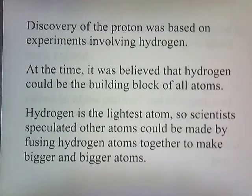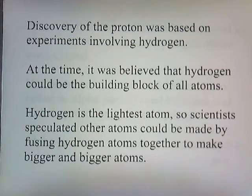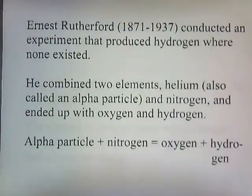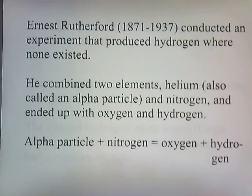The discovery of the proton was based on experiments involving hydrogen. At the time it was believed that hydrogen could be the building block of all atoms — hydrogen is the lightest atom, so scientists speculated that other atoms could be made by fusing hydrogen atoms together to make bigger and bigger atoms. Ernst Rutherford conducted an experiment that produced hydrogen where none existed. He combined helium, also called an alpha particle, with nitrogen, and ended up with oxygen and hydrogen.